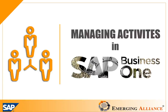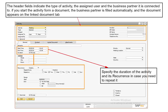In this video, you will get to know in detail about managing activities in SAP Business One. Everything you do with a customer is called an activity. There are six kinds of activities: phone calls, meetings, tasks, notes, campaign, and other, which can include email.